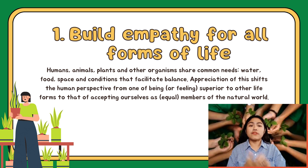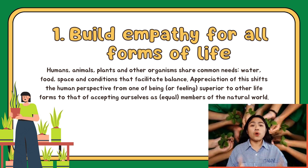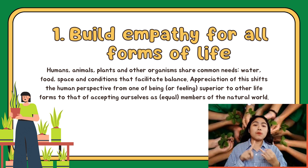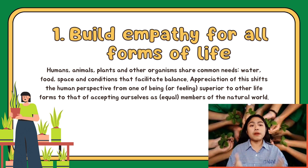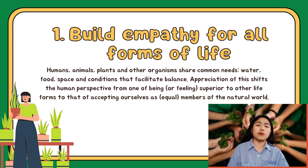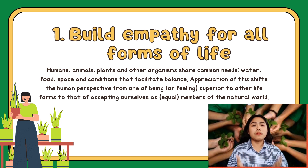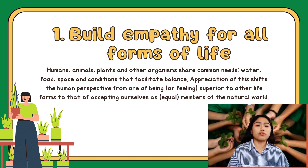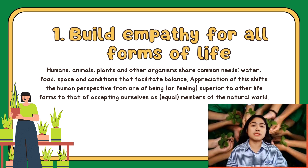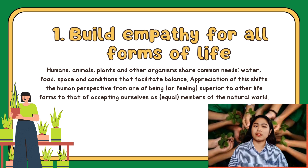Here are the five ways to develop Ecoliteracy. First, develop empathy for all forms of life. At a basic level, all organisms, including humans, need food, water, space, and conditions that support dynamic equilibrium to survive. By recognizing the common needs we share with all organisms, we can begin to shift our perspective from a view of humans as separate and superior to a more authentic view of humans as members of the natural world.